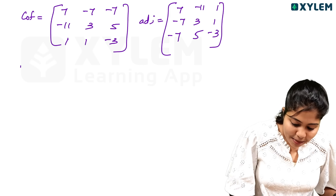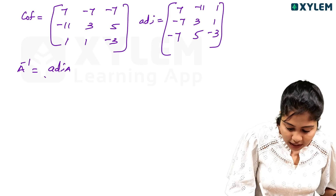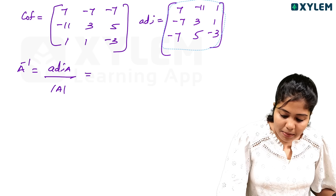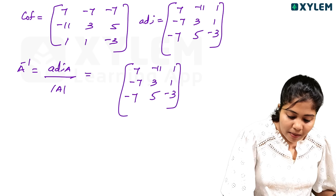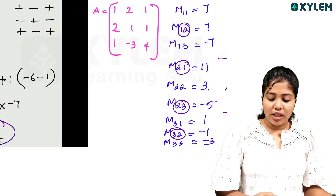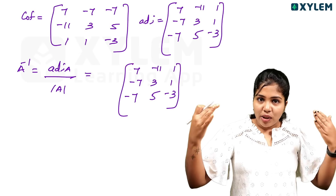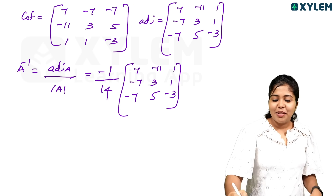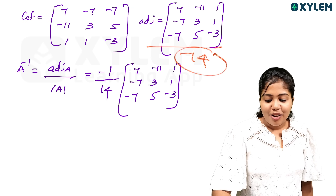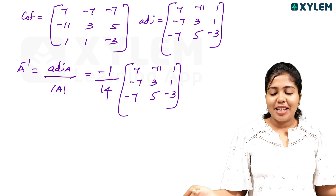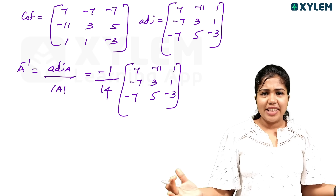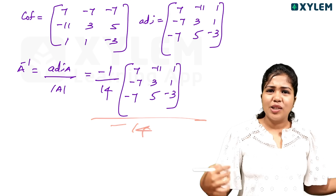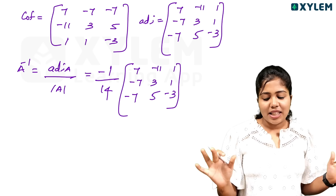Adjoint A. A inverse is equal to adjoint A divided by determinant of A. The adjoint A is the transpose of the cofactor matrix. So we transpose: first column becomes first row: 7, minus 7, minus 7; second row: minus 11, 3, 5; third row: 1, 1, minus 3. Divide by minus 14. Logically, the expression becomes 1 divided by minus 14 times the adjoint matrix.